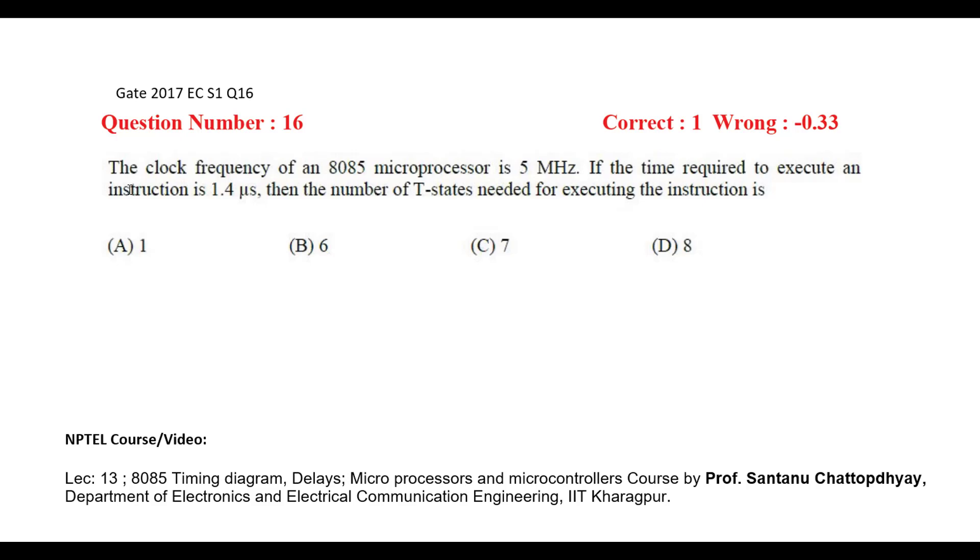So here the execution time is given as 1.4 microseconds, and this execution time equals to number of T states required multiplied by time period of the clock signal. We know that time period of the clock signal is 1 by frequency of the clock signal, given as 5 megahertz.